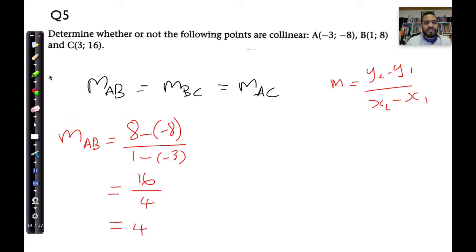So, what about the gradient of BC? Let's do that over here, M_BC. M_BC, let's take the C's first. Again, we work with the Y values and we say 16 minus 8. And what do I get? And then the next one is going to be 3 minus 1, which is going to be 8 on top divided by 2, and that gives me 4.